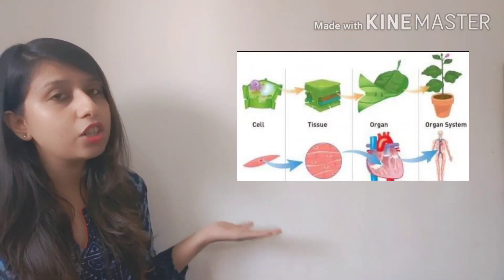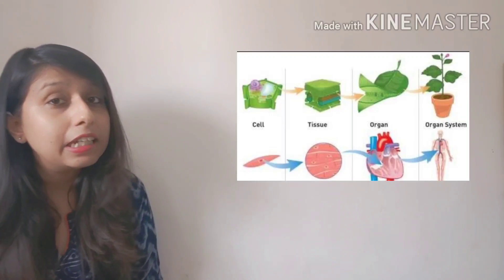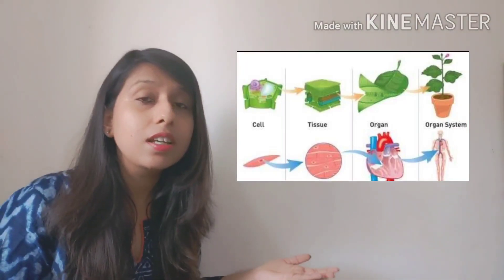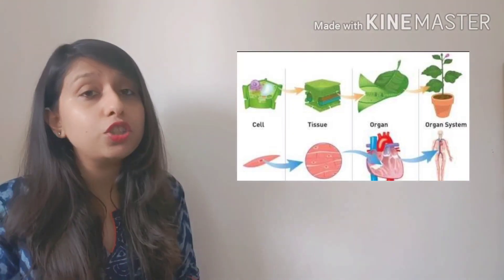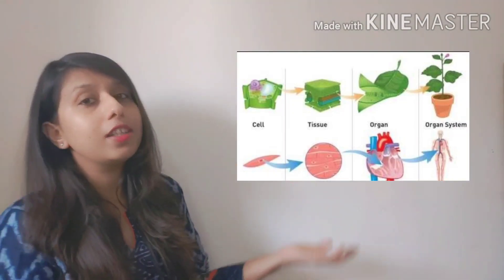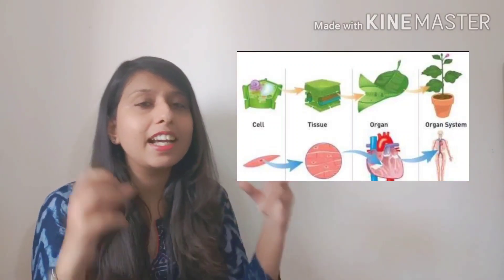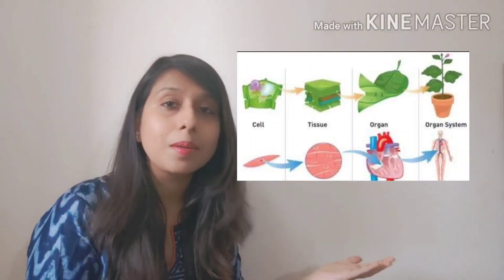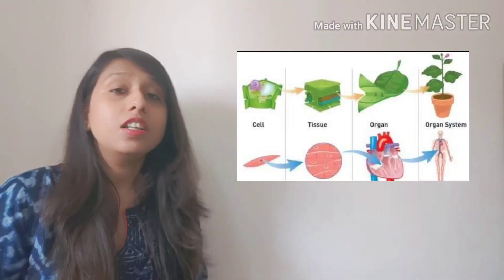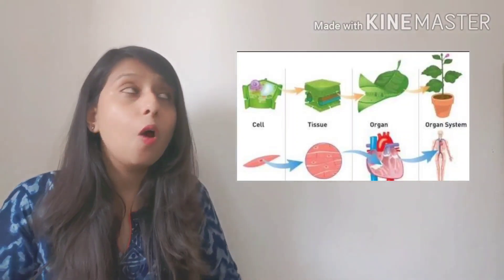Now that you know that tissues are groups of cells performing similar functions, why are we studying tissues? The reason is — imagine a situation: there are cells, and you all know a cell is the structural and functional unit of life. Then a group of cells forms tissues, and when many tissues come together, they form organs. These organs connect with each other to form a whole organ system, and finally the whole organ system constructs a whole new organism.